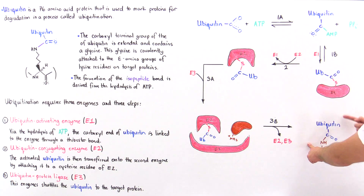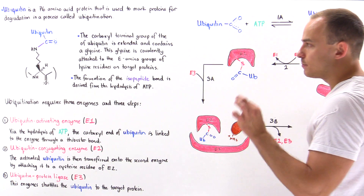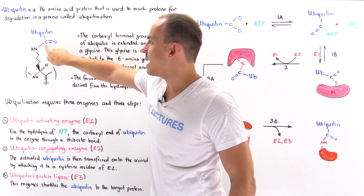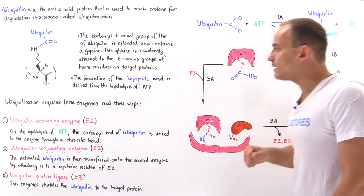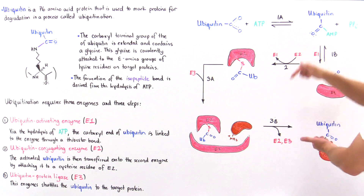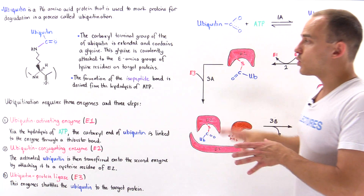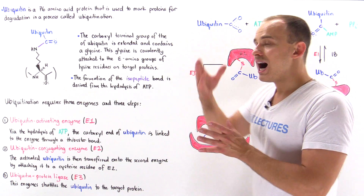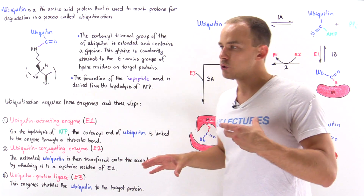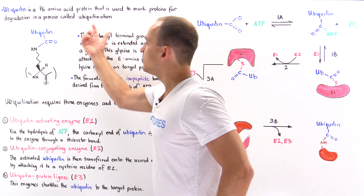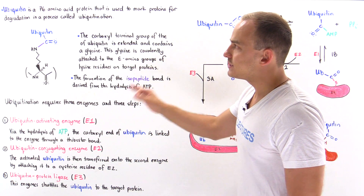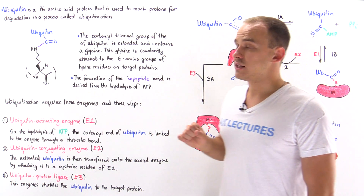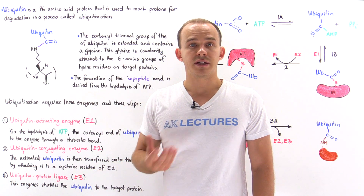Ubiquitin at its 48th position has a lysine whose nitrogen atom forms a bond in the same fashion, creating an isopeptide bond to attach a second ubiquitin, then a third, then a fourth — at which point the protein is targeted for degradation. This process can happen many more than four times and occurs on different lysine residues on the target protein. Once ubiquitination is complete, the proteasome complex finds that particular protein and begins to break it down into its constituent amino acids.